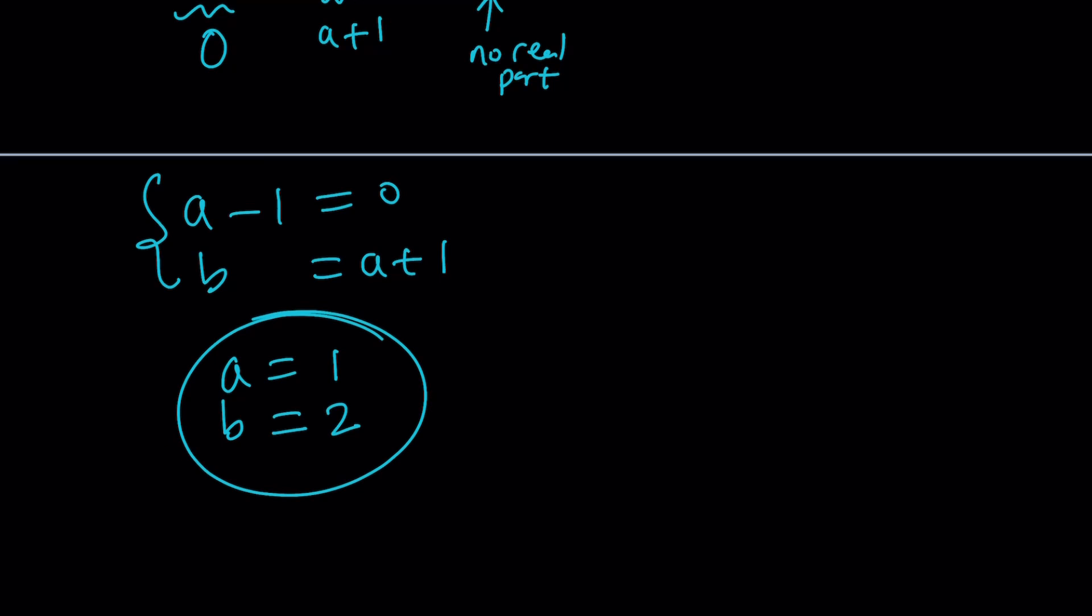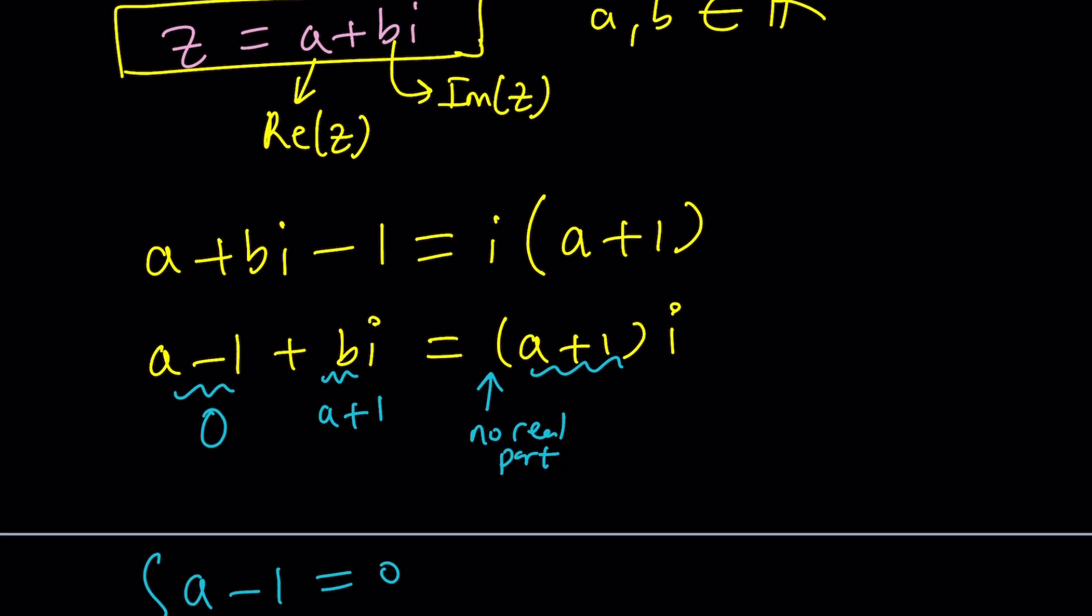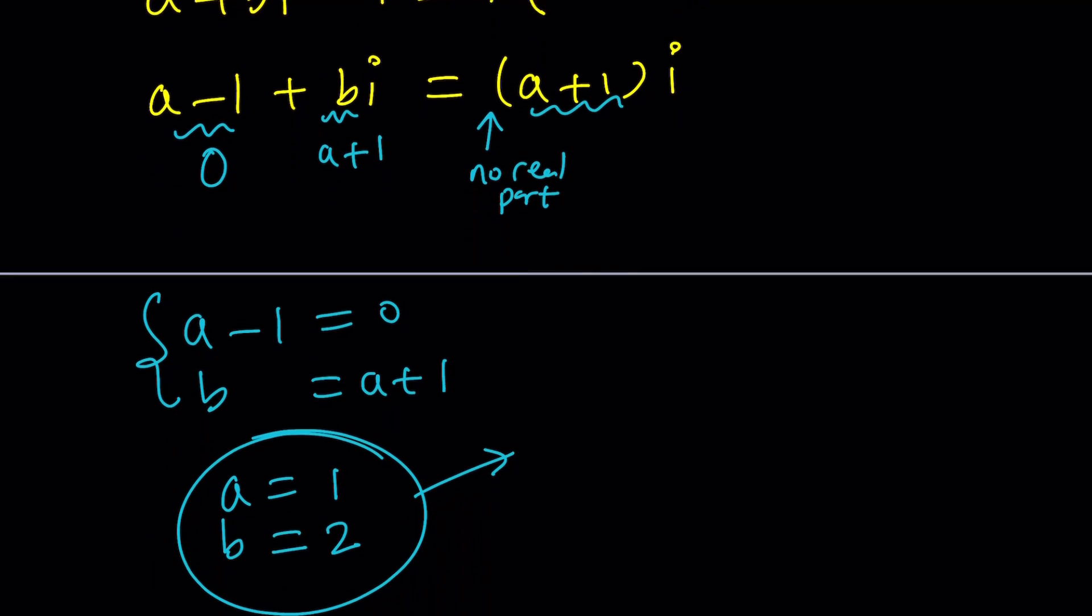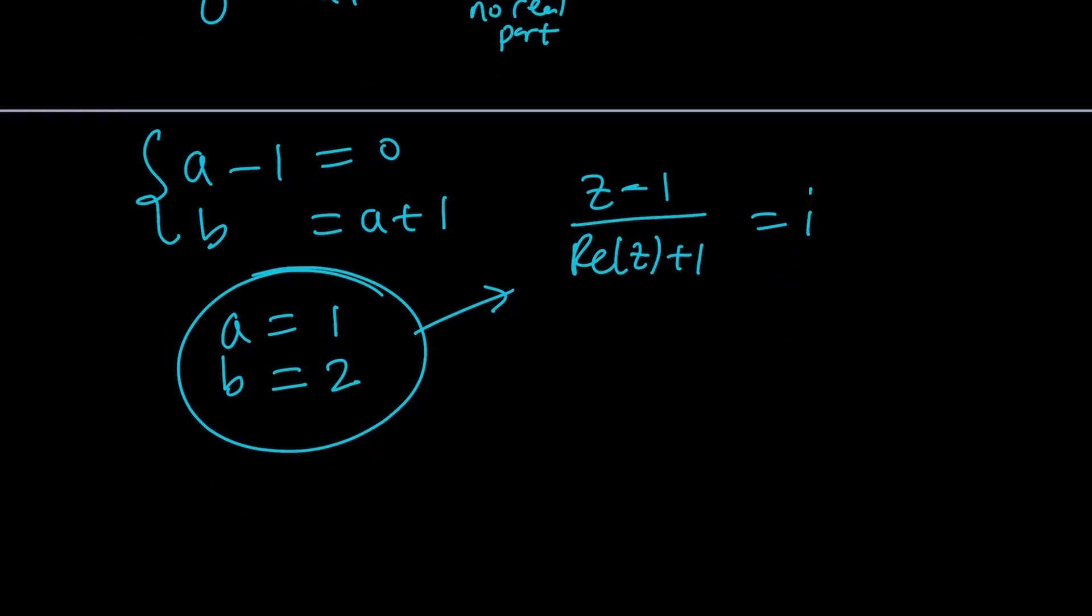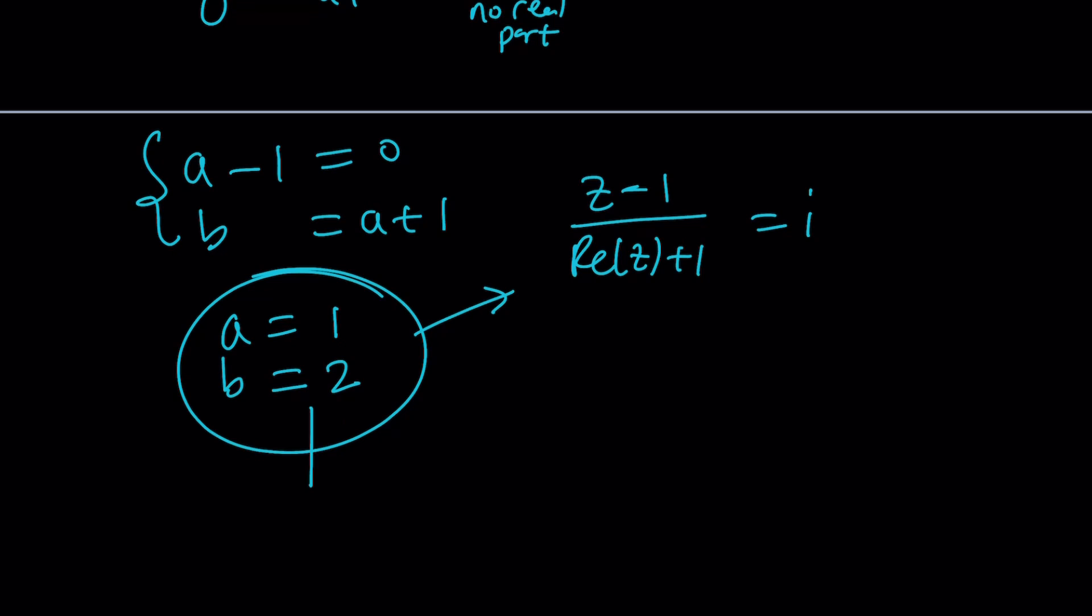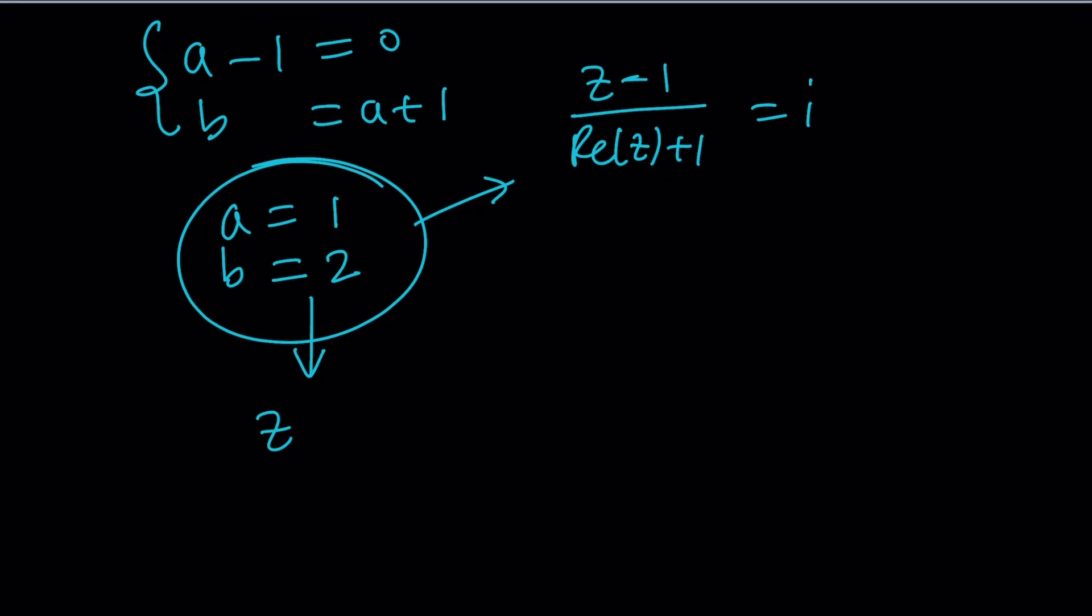You might be wondering, is there a way to check the solution? Absolutely. We can go ahead and plug this into the original and see if it's going to work. My original equation was Z minus 1 divided by real part of Z plus 1 equals I. Hopefully you memorize it by now. And this implies that if A is 1 and B is 2, then Z is going to be 1 plus 2I. Let's plug it in. 1 plus 2I minus 1 divided by, the real part of Z is 1 plus 1. Is that equal to I?